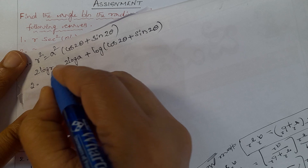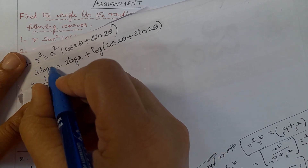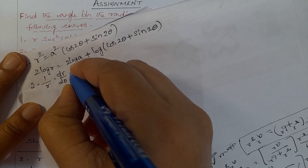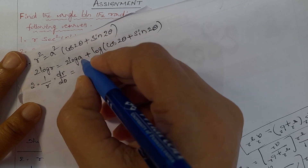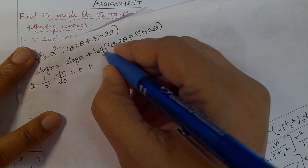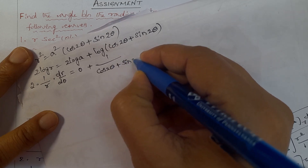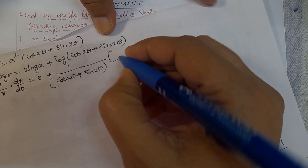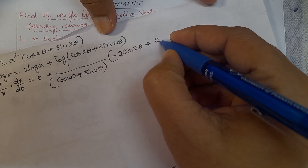Differentiating: 2·(1/R)·(dR/dθ) = 0 + 1/(cos2θ + sin2θ) times the differentiation of (cos2θ + sin2θ). Differentiation of cos2θ is -2·sin2θ, and differentiation of sin2θ is 2·cos2θ. The 2's cancel on both sides, so (1/R)·(dR/dθ) = cot φ = [cos2θ·(-sin2θ) + sin2θ·cos2θ] rearranged.